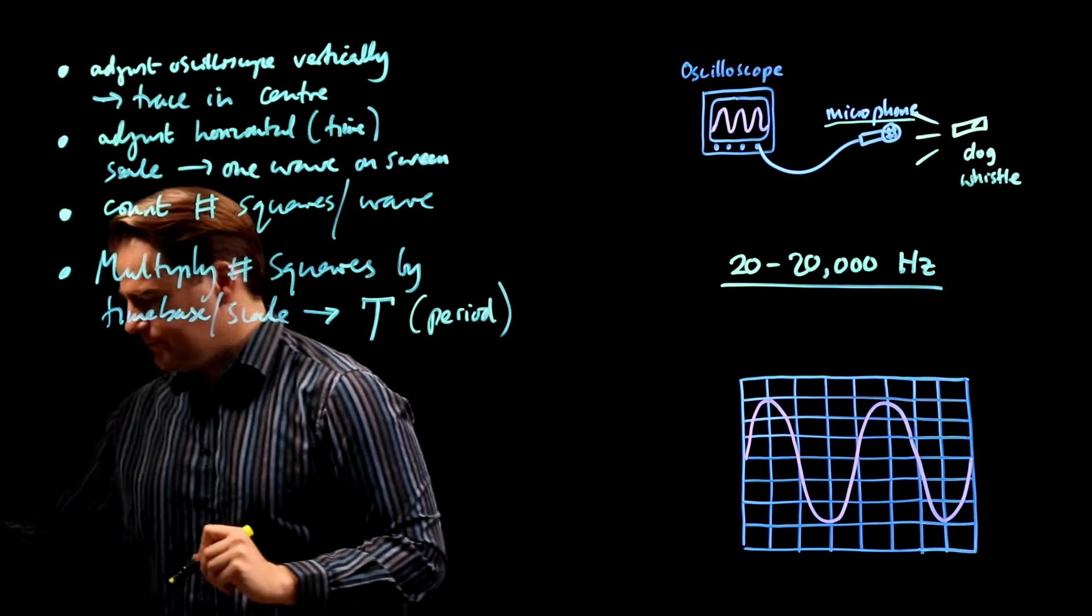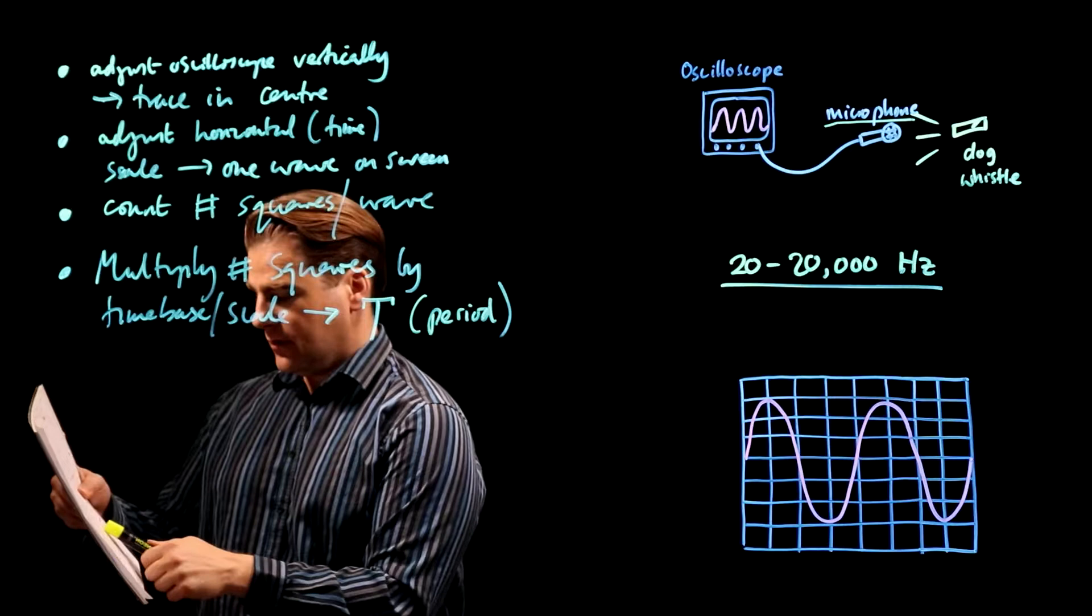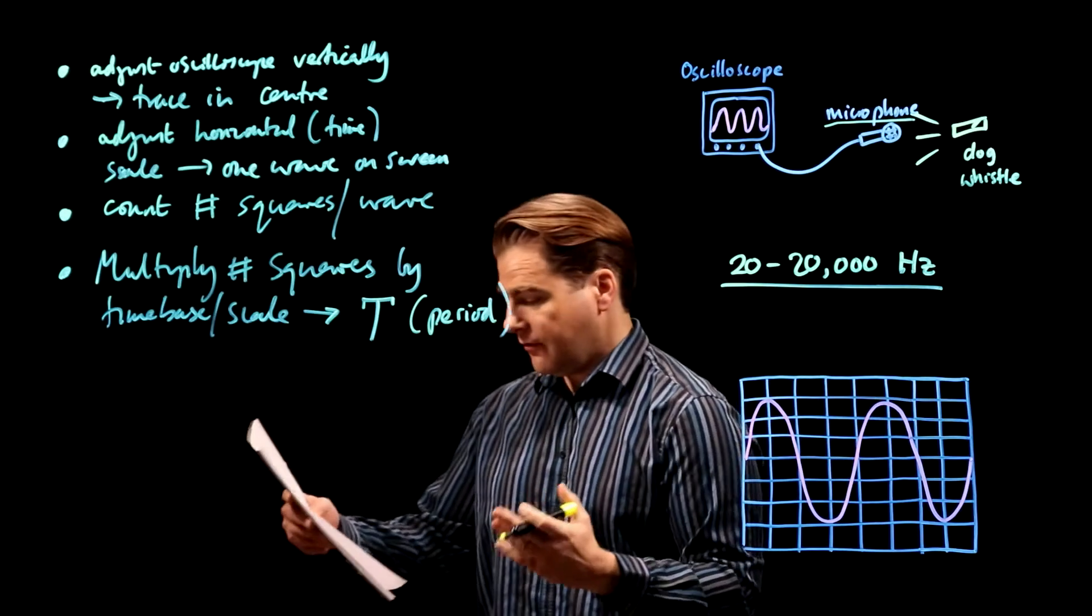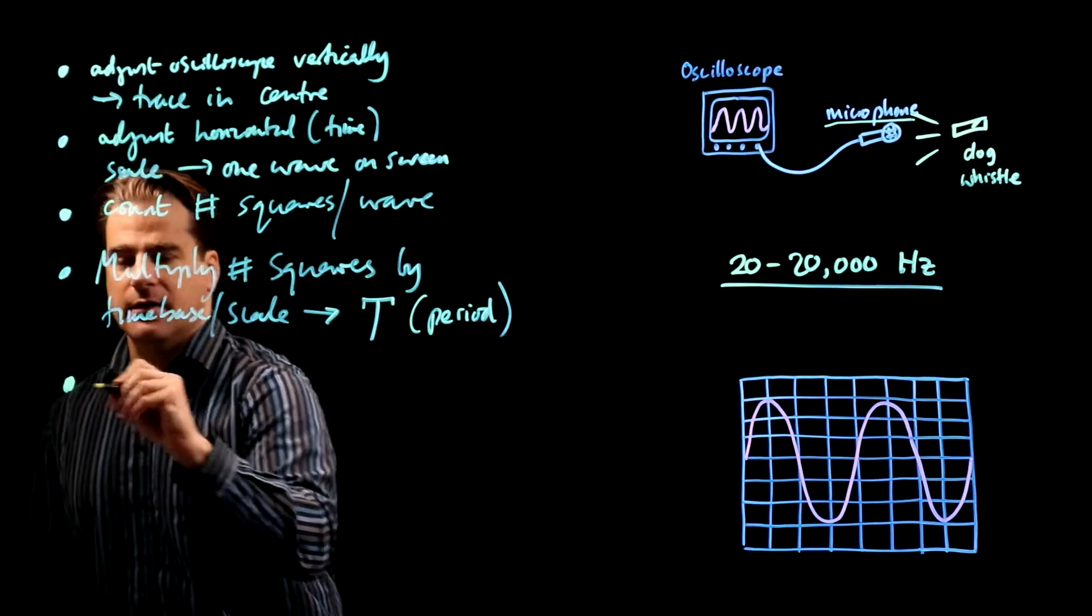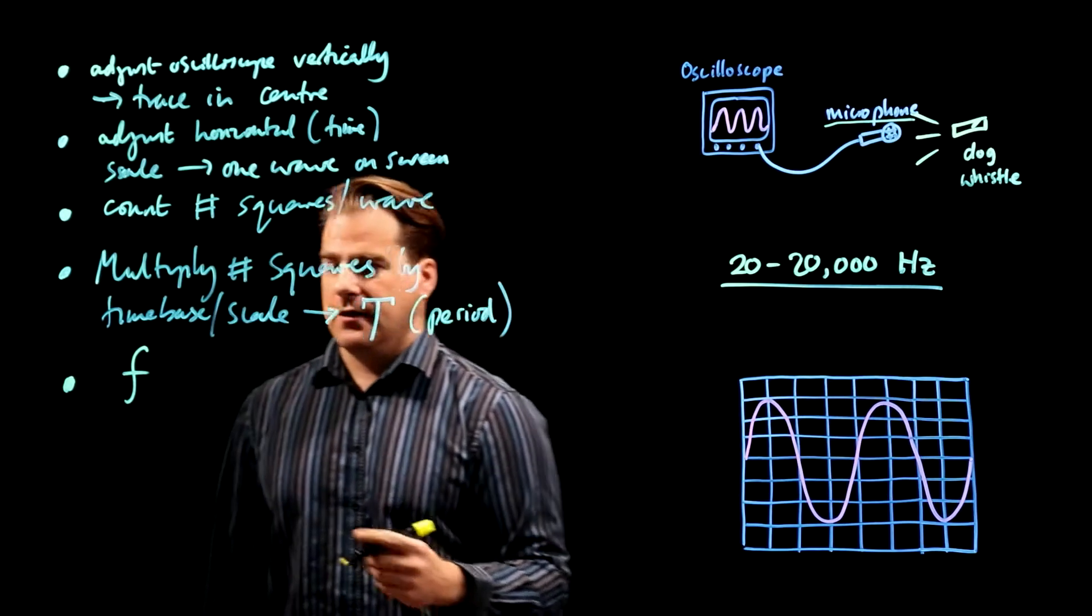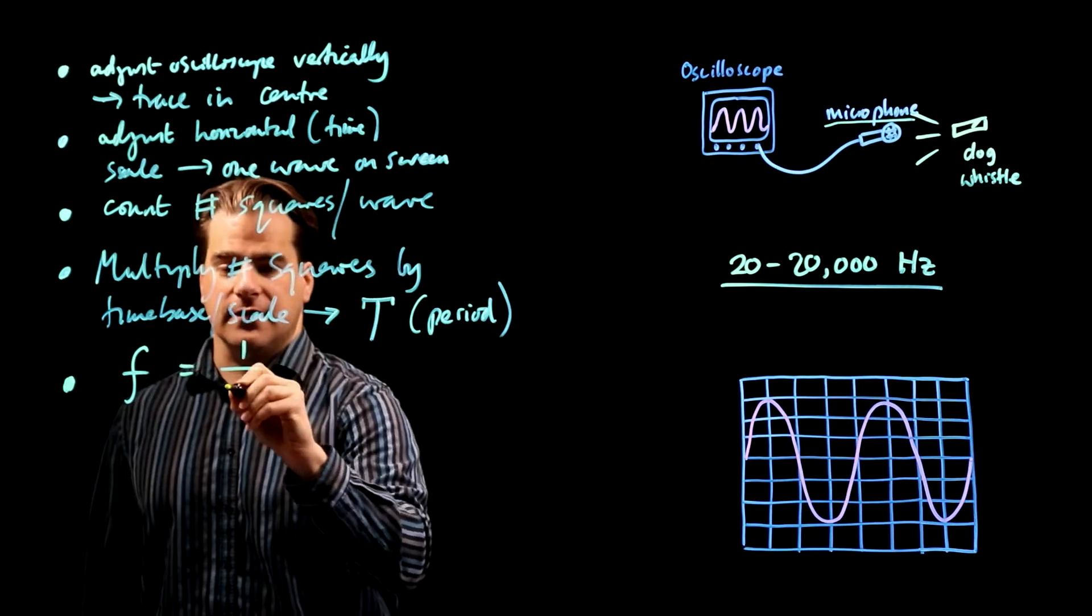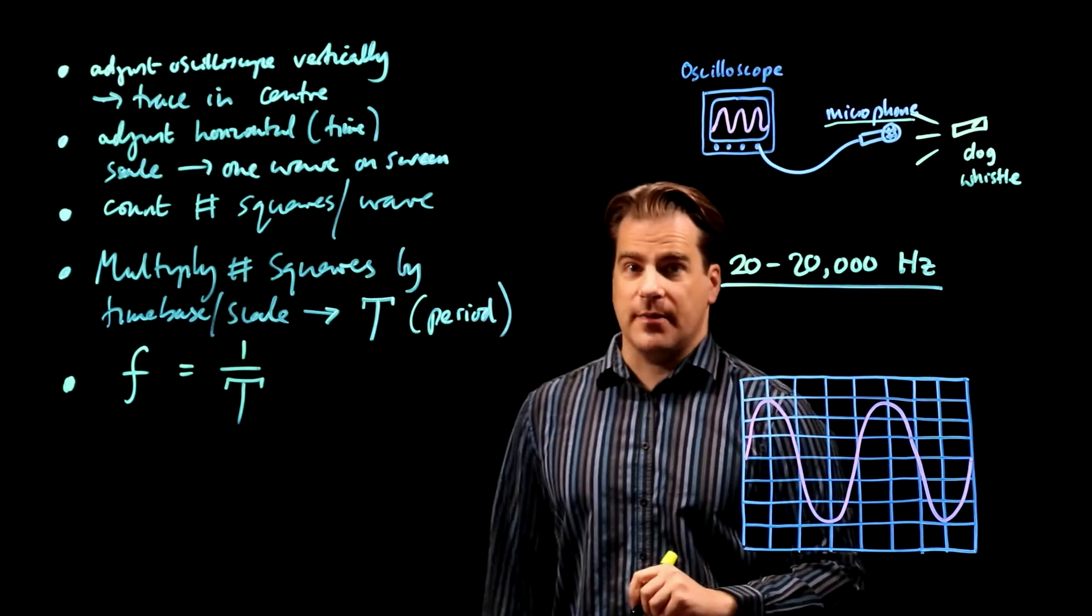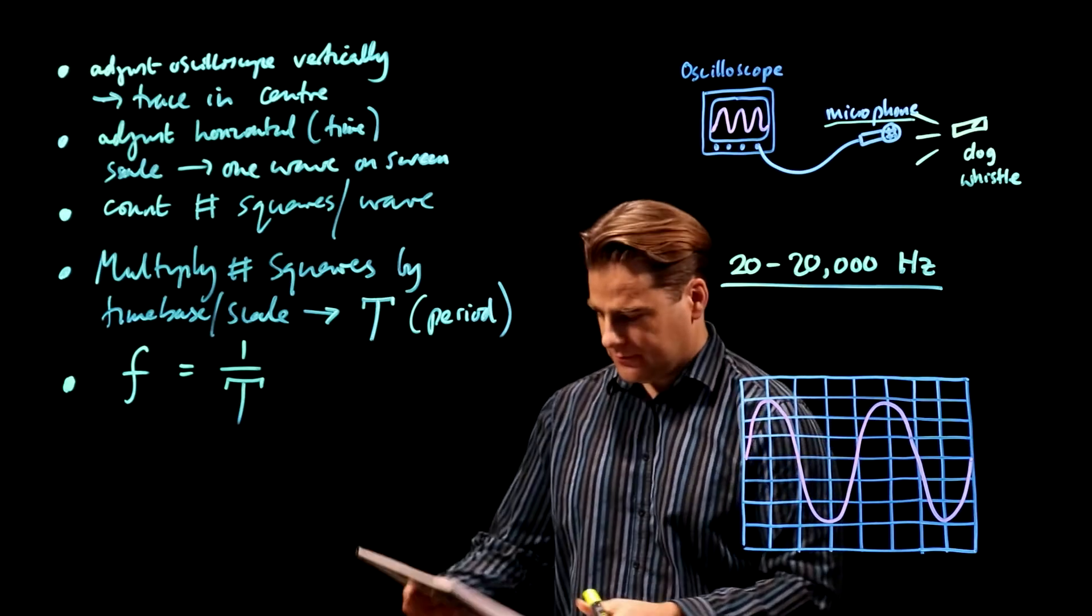And finally, the question did say describe how a student should use the apparatus to determine the frequency of the sound. So you have to answer the question. You're aiming for frequency here. To work out the frequency from the period, you have to know the relationship. The frequency is the inverse of the period, or one over the period. And that will definitely get you three marks.